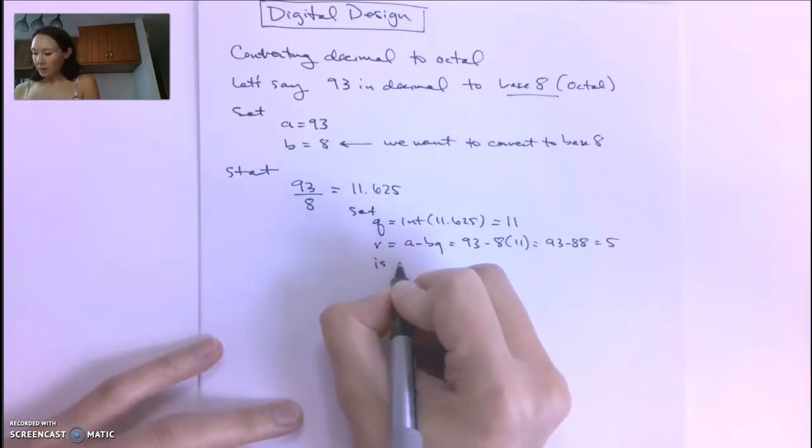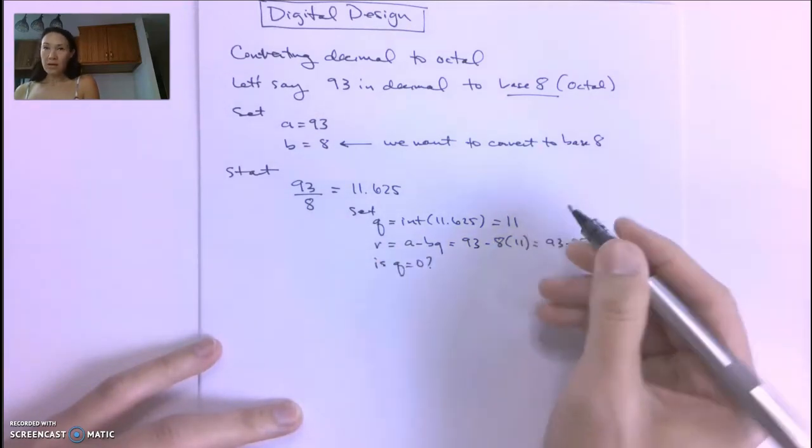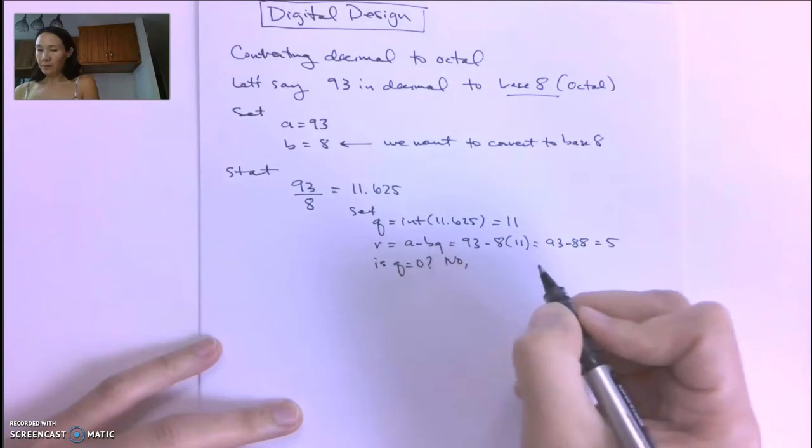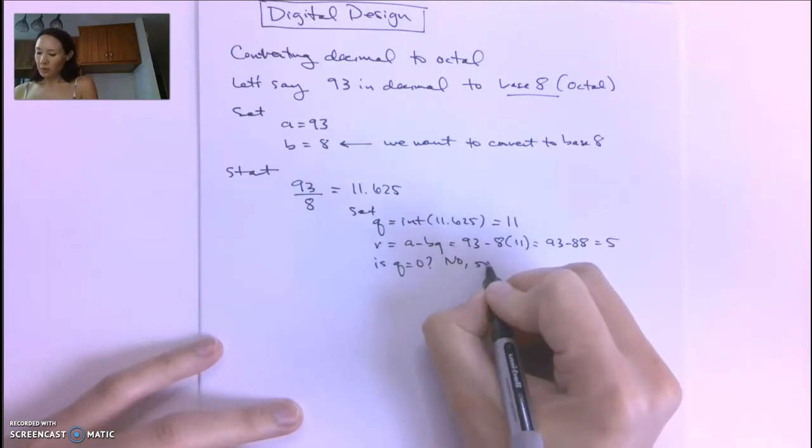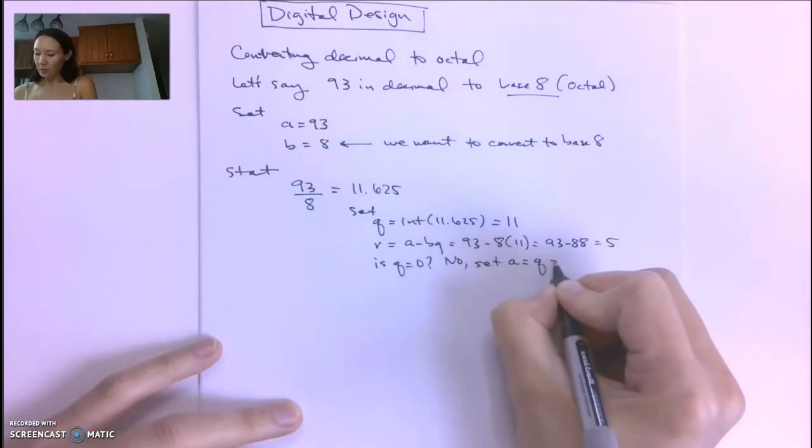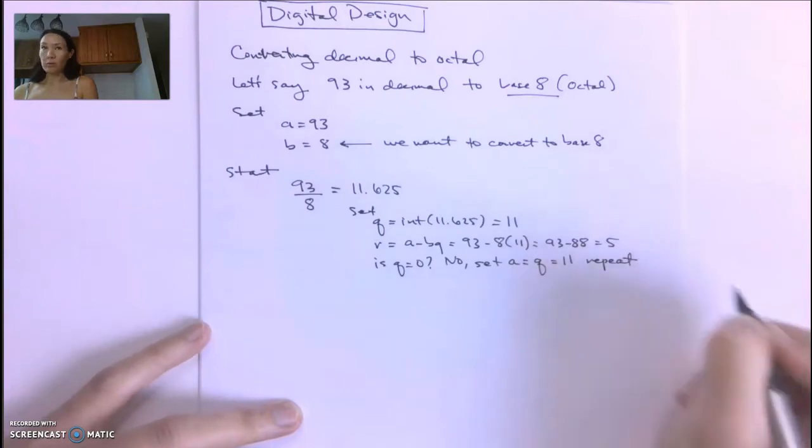Then we ask, is Q equal to 0? Our Q is 11, so the answer is no. The next step is to set A equal to Q, which is 11, and repeat.